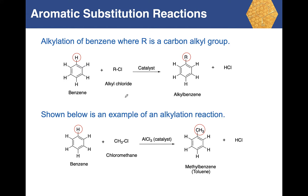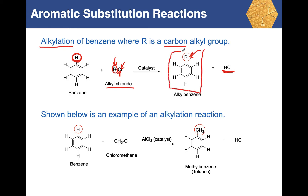Another reaction covered last lecture was alkylation. An alkyl group is a carbon-containing group. Here we have benzene with a hydrogen, and the other reactant is an alkyl chloride, R and Cl. The substitution reaction involves the R group replacing the H, giving an alkylbenzene as the organic product. The other product is HCl.